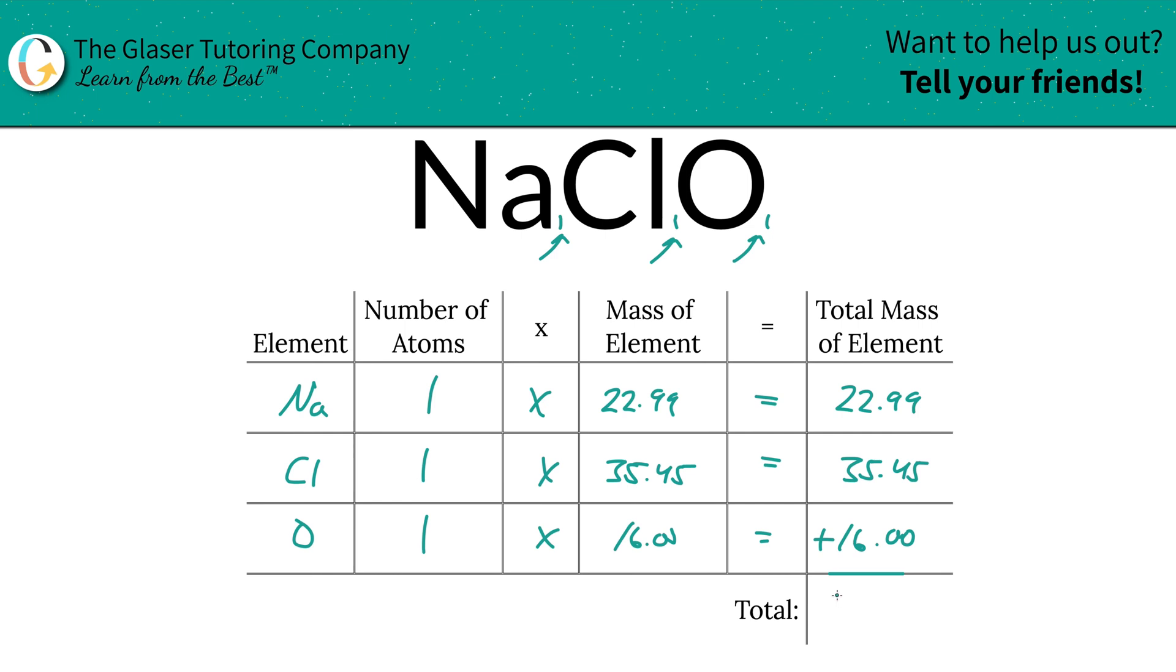And then to find the total, just simply add this all together. So we get 74.44. That was the first step of the process, finding the total mass.